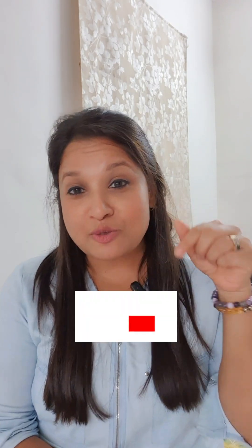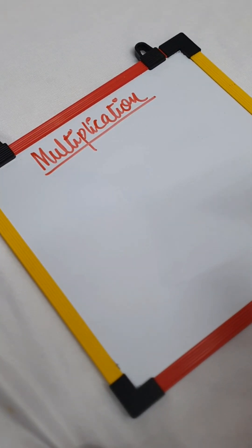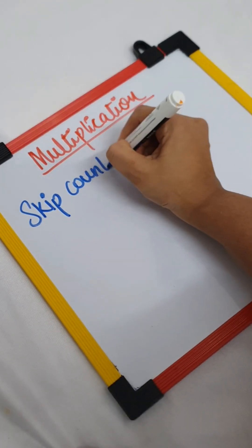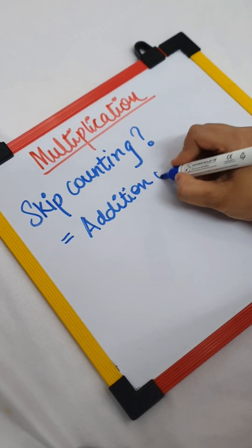Before we start, subscribe to my channel if you haven't yet. The first step to introduce multiplication is to introduce skip counting. What is skip counting? Skip counting is basically addition where we keep on adding the same number to get the answer. For example, if I say 4 and you have to skip count 2, that means 4 plus 2 is 6, 6 plus 2 is 8, 8 plus 2 is 10. So skip counting is basically addition of the same number.